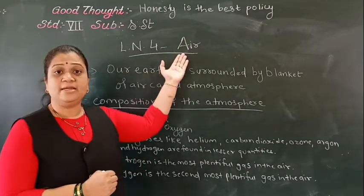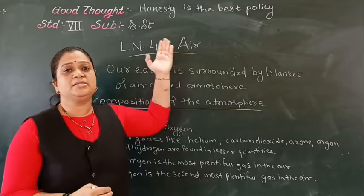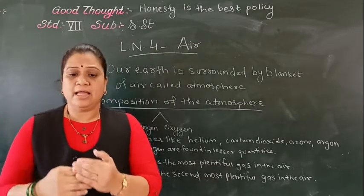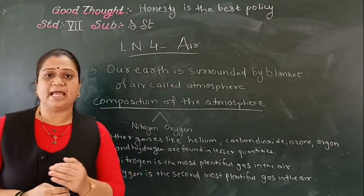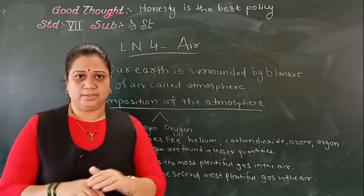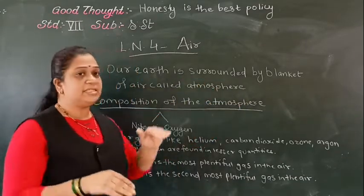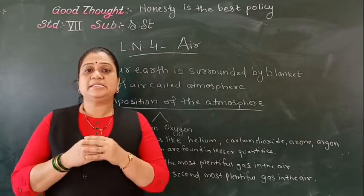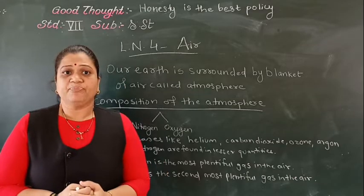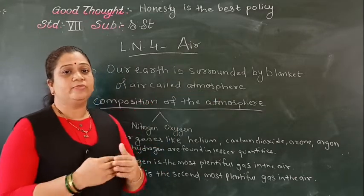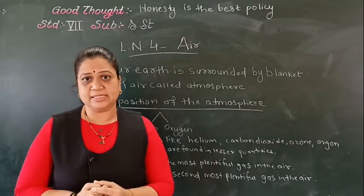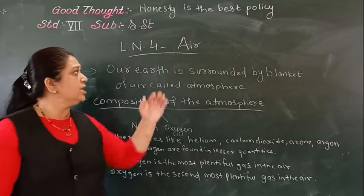Air is the most important component, necessary for all living beings — not only for human beings but for plants and animals also. In the atmosphere, there is a layer called the ozone layer that saves us from the harmful rays of the sun. If this layer were not there, life on earth would not have been possible and we would have suffered from many diseases.